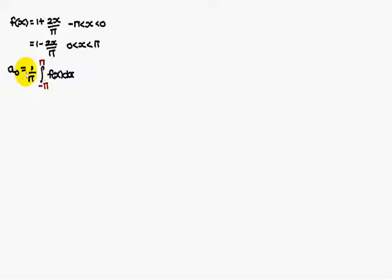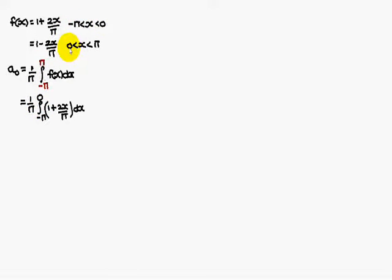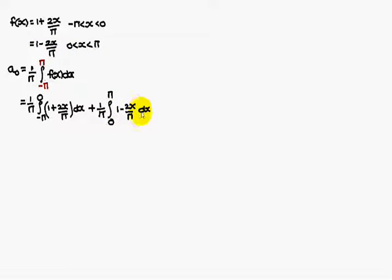Therefore, a₀ is equal to — the formula is 1 by pi integral minus pi to pi f of x dx. That is equal to 1 by pi. The entire interval minus pi to pi has been divided into minus pi to 0 and 0 to pi. For minus pi to 0, the function value is 1 plus 2x by pi, and for 0 to pi, it is 1 minus 2x by pi.